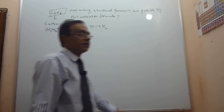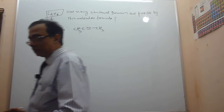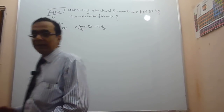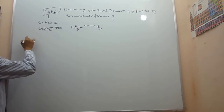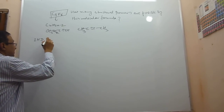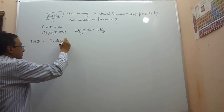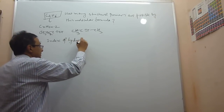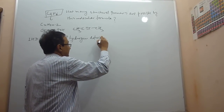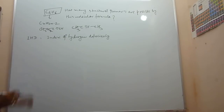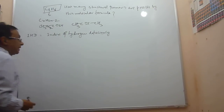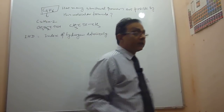There are actually nine isomers by this molecular formula. How is it possible? It is possible by using the concept of IHD — Index of Hydrogen Deficiency. It is also called double bond equivalence, and it is also known as degree of unsaturation.